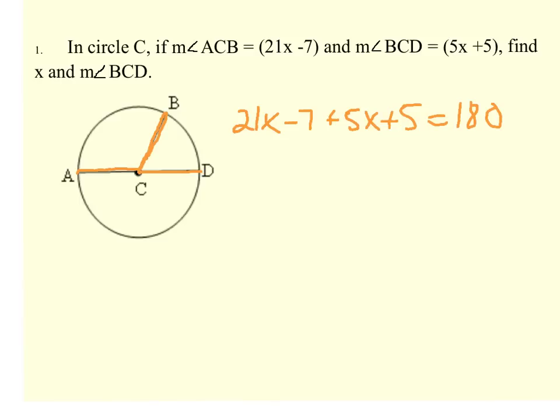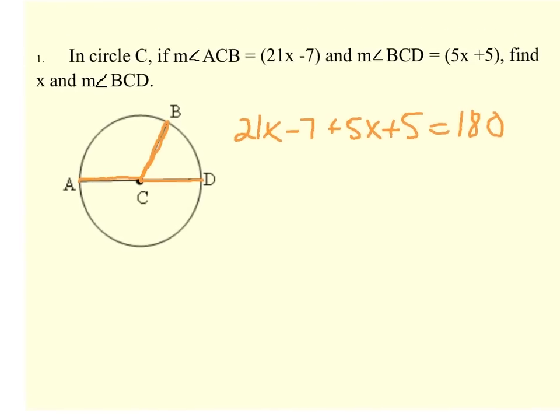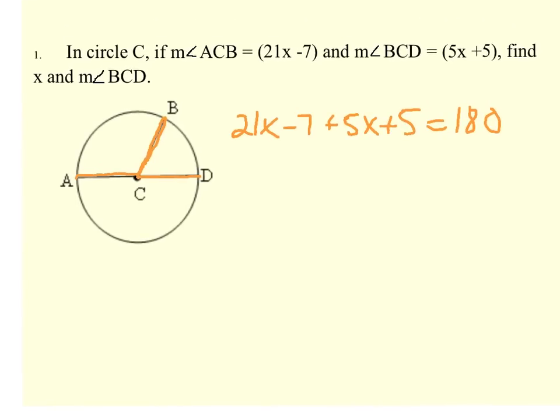So now let's just solve this for x. If we combine like terms, 21x plus 5x is 26x. Negative 7 plus 5 is minus 2. So then we're going to add 2 to both sides. We get 182. And if we divide both sides by 26, we get x equals 7.